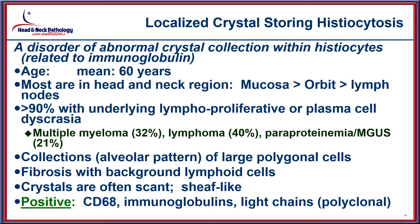The next lesion in the differential is localized crystal storing histiocytosis, which as the name suggests is an abnormality of histiocytes usually related to some sort of immunoglobulin. It usually presents in adults and so would probably not be considered within the differential of this case.